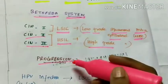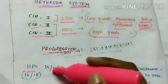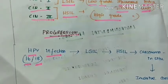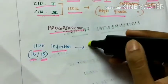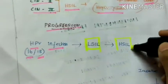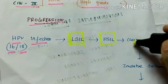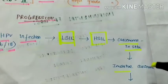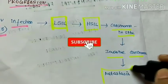Next is progression. The HPV infection with the types 16 and 18 progresses to LSIL which is low grade SIL and it further progresses to high grade SIL followed by carcinoma in situ and this leads to invasive carcinoma and metastasis.